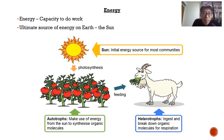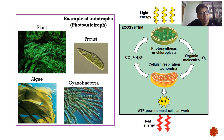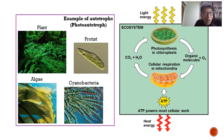A bit more background on autotrophs: those that undergo photosynthesis are classified as photoautotrophs. There is another type of autotroph that does not undergo photosynthesis — they make organic molecules via chemical reactions, and those are called chemoautotrophs. However, chemoautotrophs are very few; the main group of autotrophs are the photoautotrophs that undergo photosynthesis.